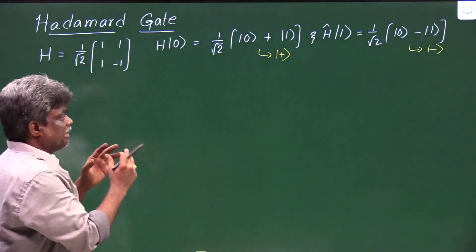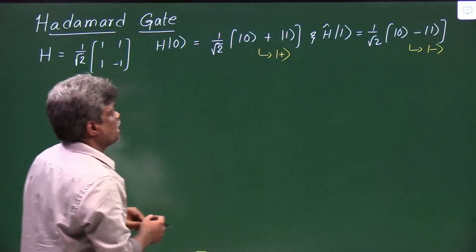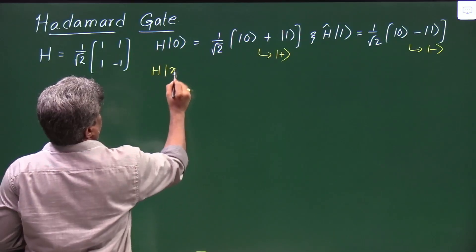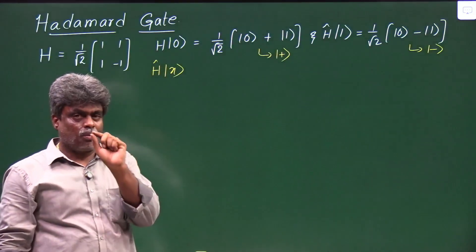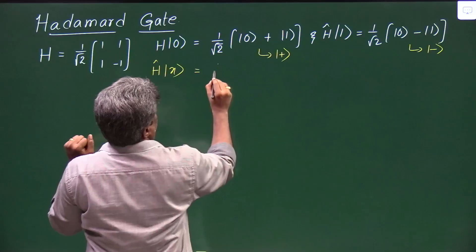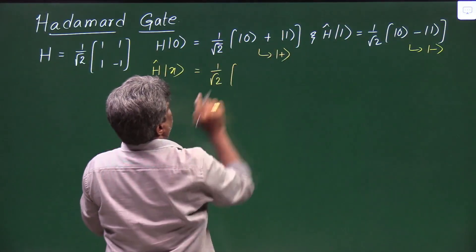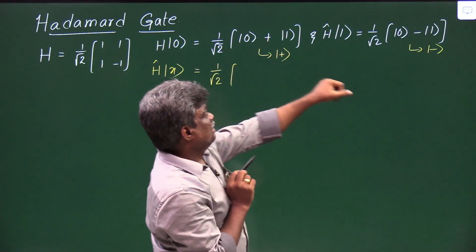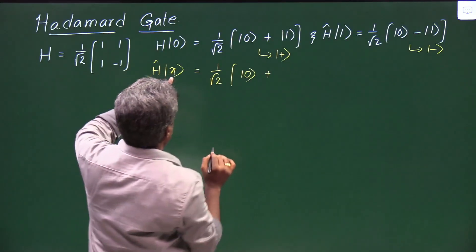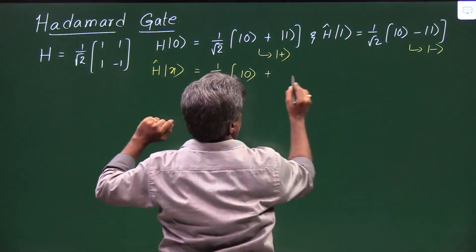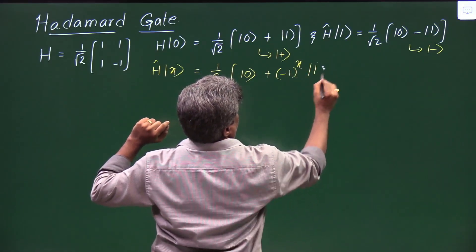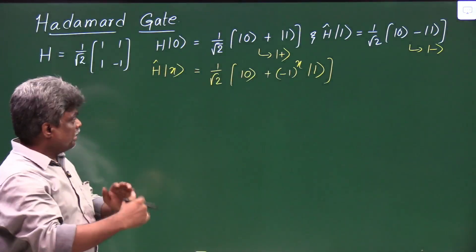First let me write the usual notation, and after that I will come back to my trick. In a more general way, the Hadamard operates on |x⟩, where x is a 1-bit string since this is a single qubit operator. This equals (1/√2) times a linear combination of |0⟩ and |1⟩, where |0⟩ has a plus sign and |1⟩ has a coefficient of (−1)^x, giving us |0⟩ + (−1)^x |1⟩.